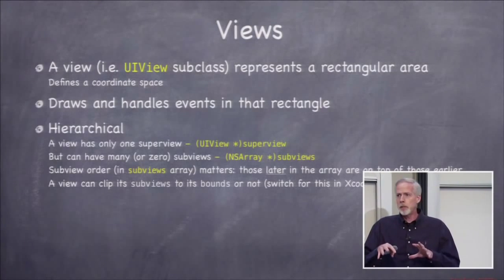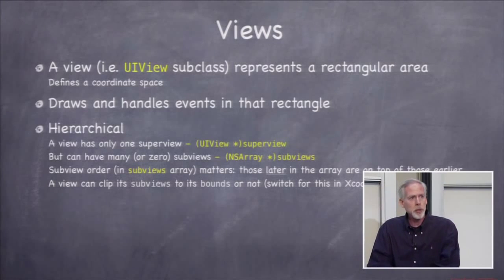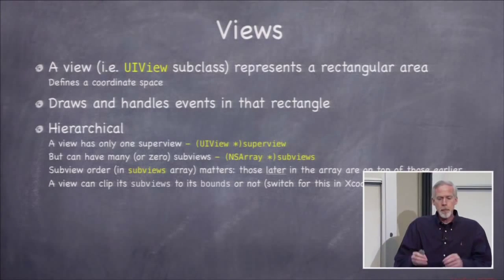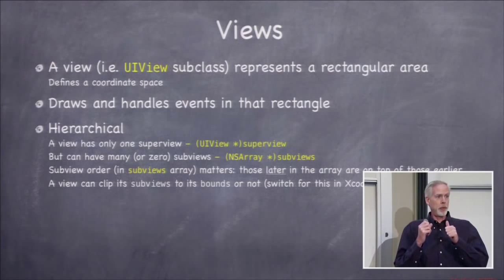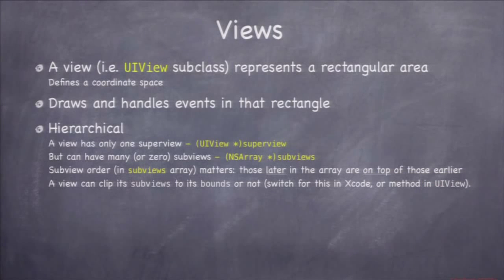It's hierarchical. So you can have views inside views inside views. Every view only has one superview, but a given view could have many subviews, and those subviews are just rectangles. They can overlap, whatever. They're not required to somehow be tiled or separate. They're completely freeform subviews of a given view. And you can have any number of subviews you want for a given view. The order of the subviews does matter because they can be transparent, and we'll talk about that.